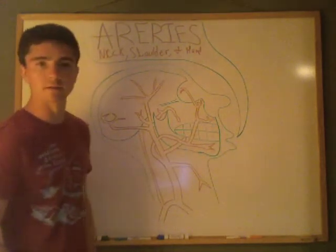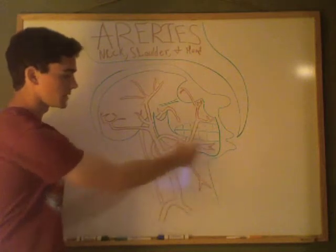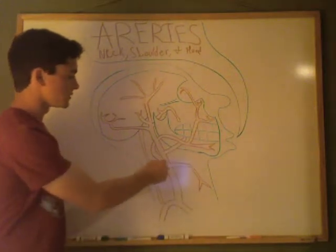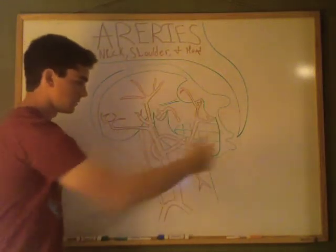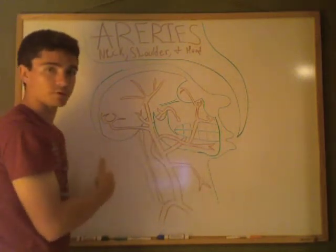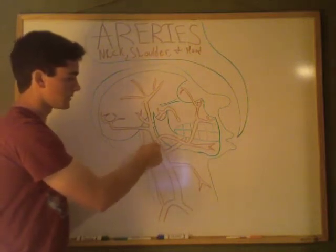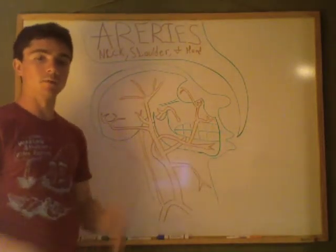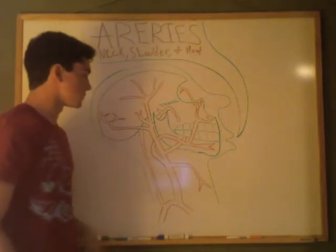Let's begin with the right common carotid. The carotid is going to come up and branch into the right superior thyroid artery, and then branch off into its external and internal portions. The branch going more anterior is the external, and the branch more posterior is the internal. The internal is going to make its way up to the middle part of the cerebrum, and we'll talk about that when we discuss the circle of Willis along with the vertebral artery.